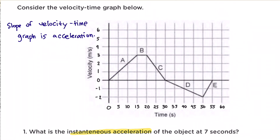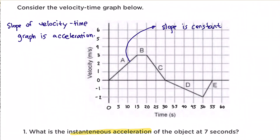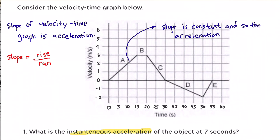So if we get the slope of this graph from zero to fifteen seconds, we will obtain the acceleration. The slope is constant for this part of the graph, and so is the acceleration. Now let's solve for the slope — we just have to pick two points on this graph and substitute them into the formula for slope, which is rise over run. We could choose any points from zero to fifteen seconds.